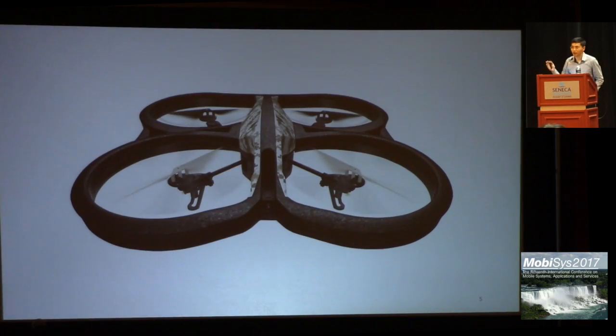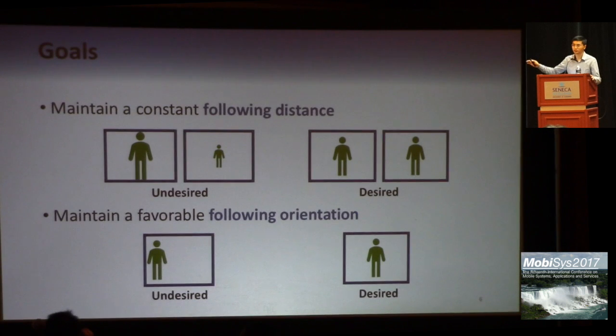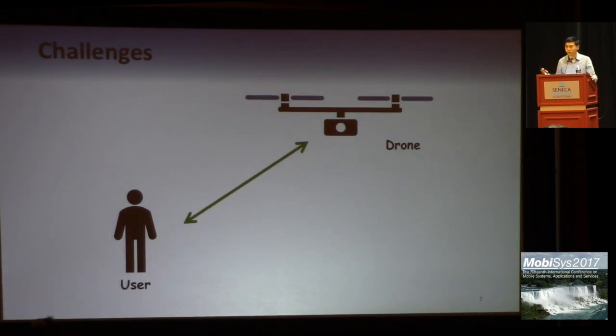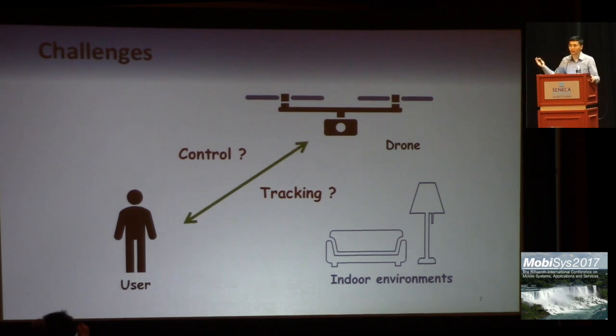With inexpensive and powerful drones, we can make the drone automatically follow a user for videotaping. To achieve higher quality videotaping, we need to maintain a constant following distance between drone and user so that videos are stable and smooth. Also, we need to maintain a favorable orientation between them so that the users appear in the desired region of the video. To achieve these goals, we need to solve two problems: first, measure the distance and orientation between the drone and the user, and such measurement should be available indoors to support the indoor follow-me function. Based on the measurement, we need to control the flight of the drone to keep the desired distance and orientation.